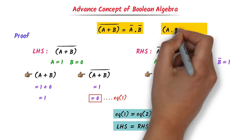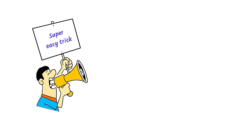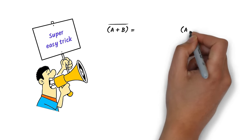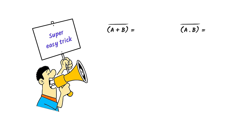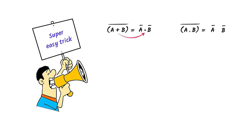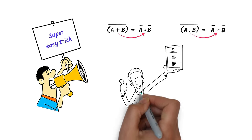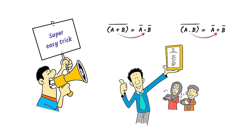Similarly, (a dot b) whole bar is equal to a-bar plus b-bar. My personal super easy trick to remember these two equations: write a-bar b-bar on both sides; if there is plus, convert it to dot, and if there is dot, convert it to plus. That is the super fast trick to remember these two equations.